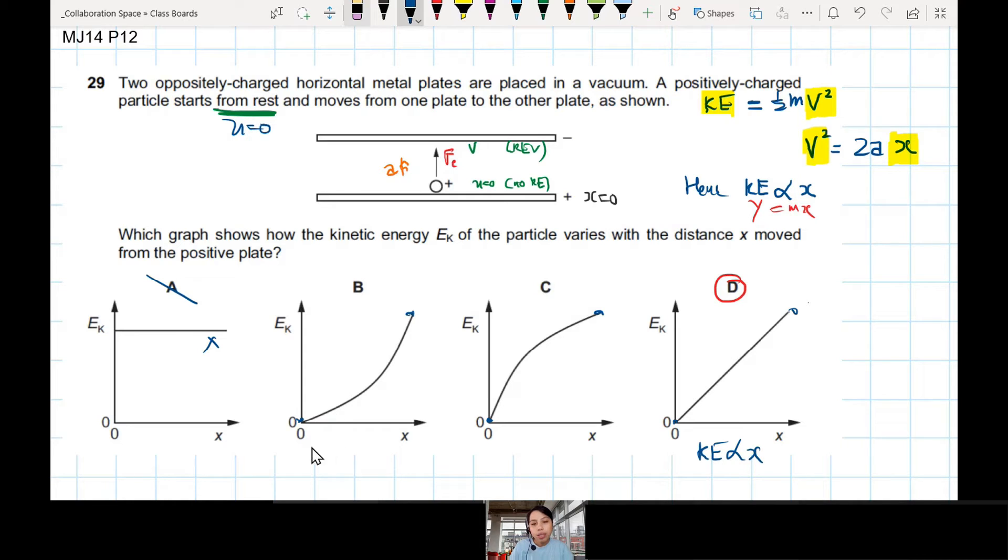This one, if we choose this, we are saying KE is proportional to x squared. Quadratic graph curve like this, curve up one. This is actually from the simple harmonic motion graph, kind of. But it's not correct in this case because we don't have x squared. This graph, if curve like this, could possibly be a square root graph, K proportional to root x, which is not correct in this case.